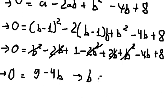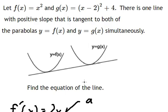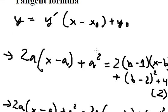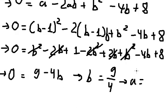We can now find the value of b, which should be 9 over 4. Then we can find the value of a by substituting b equals 9 over 4 back in. We put 9 over 4 in here and we get a equals 5 over 4.